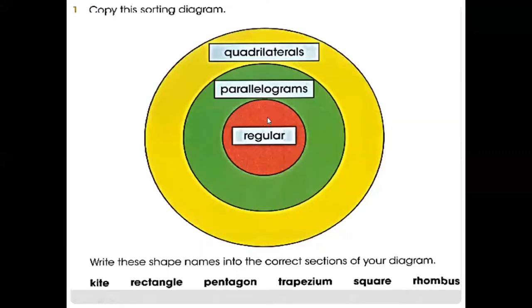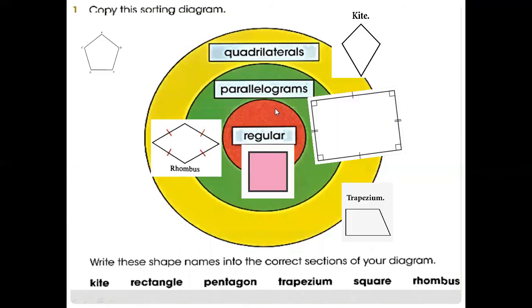Now, question number one. The first shape is a quadrilateral, then parallelogram, then regular. A quadrilateral has four sides, a parallelogram also has four sides, and a regular shape — we call it rectangle. These are the names; you just put them in the correct places.